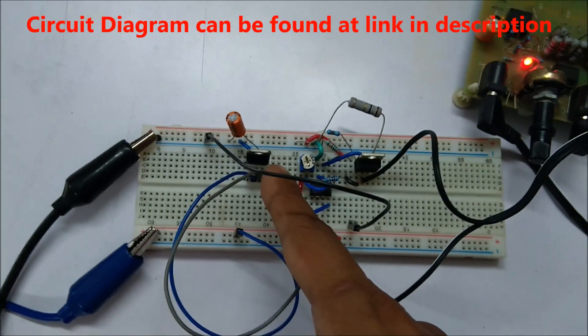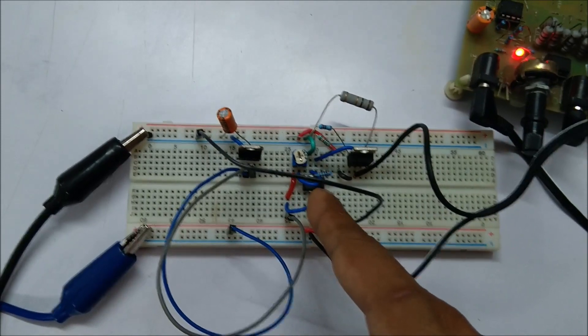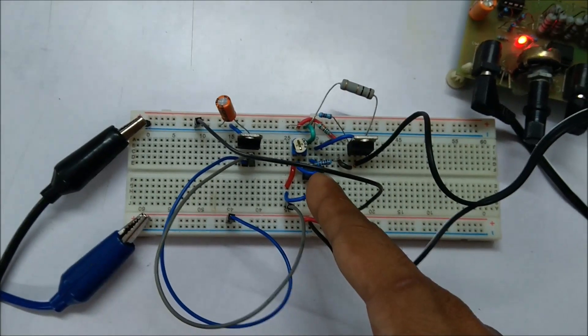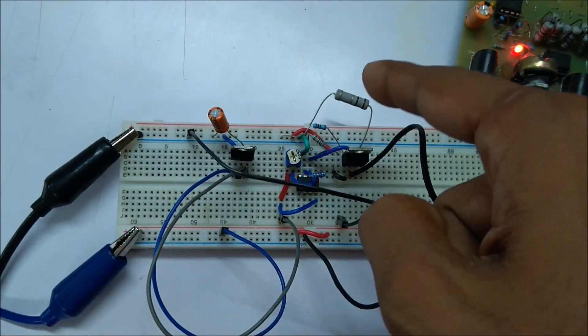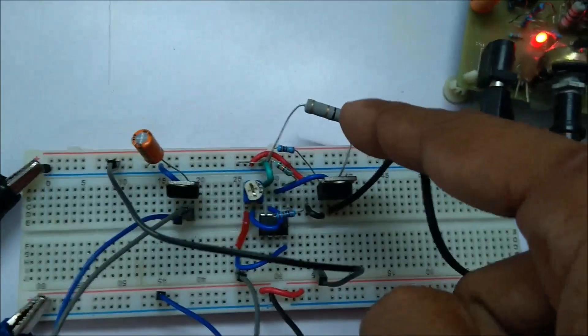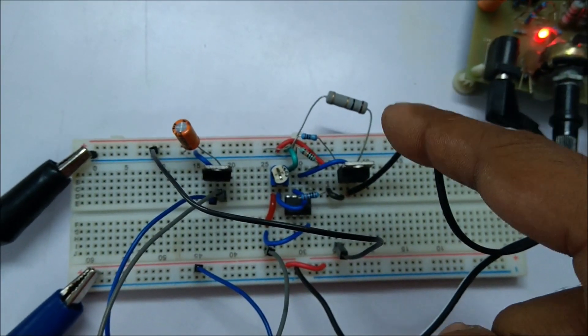The LM358 is configured in comparator mode. It is comparing two values. First of all, here is a shunt resistor that is 1 ohm. Therefore, 1 ampere of current produces 1 volt of drop across this resistor.